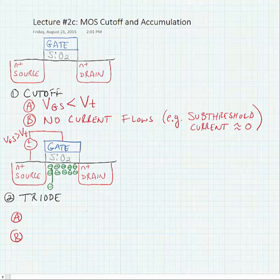Now, once we have enough of these free carriers in the channel, this is called inversion. The operation that inverts the channel is called accumulation. Which makes sense. We're accumulating free charge carriers in the channel of the transistor.